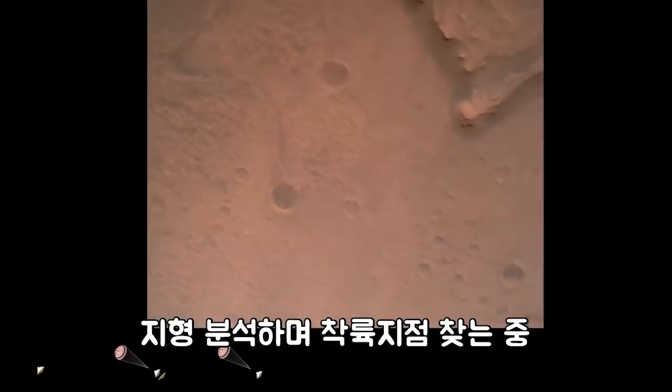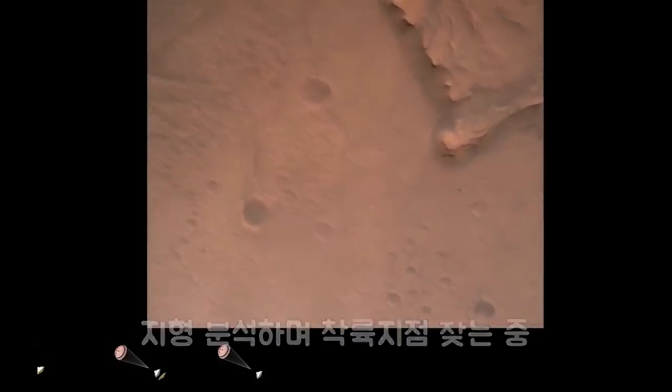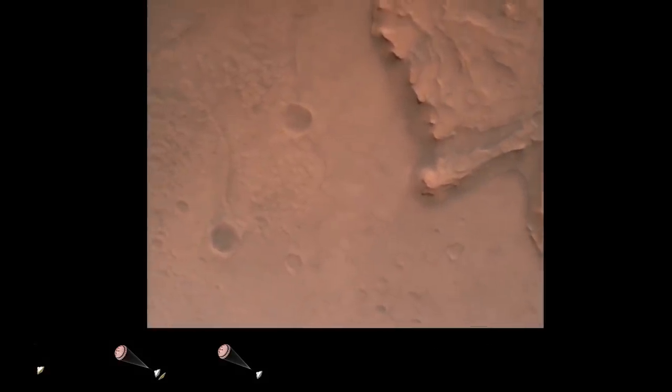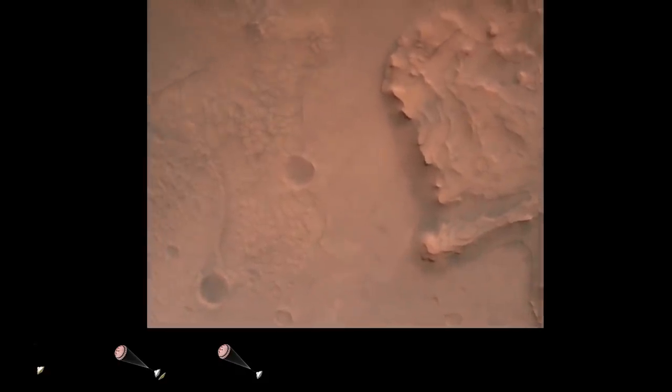Nav filter converged. Velocity solution, 3.3 meters per second. Altitude, 7.4 kilometers. Now has radar lock on the ground. Current velocity is about 100 meters per second, 6.6 kilometers above the surface of Mars.